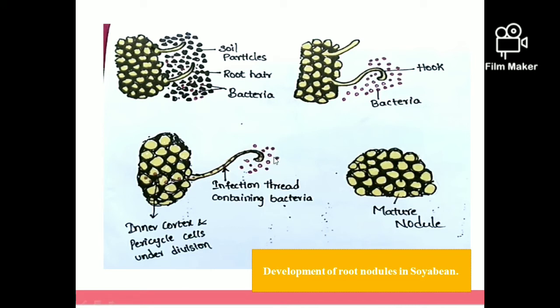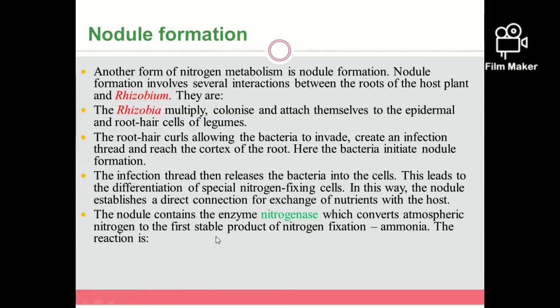The bacteria release enzymes into the cell wall such as cellulases, pectinases, and hemicellulases, which help them penetrate the root cells. When the nodules mature, the host plant forms a vascular connection to the root nodules. The nodule contains the enzyme nitrogenase, which converts atmospheric nitrogen to ammonia.